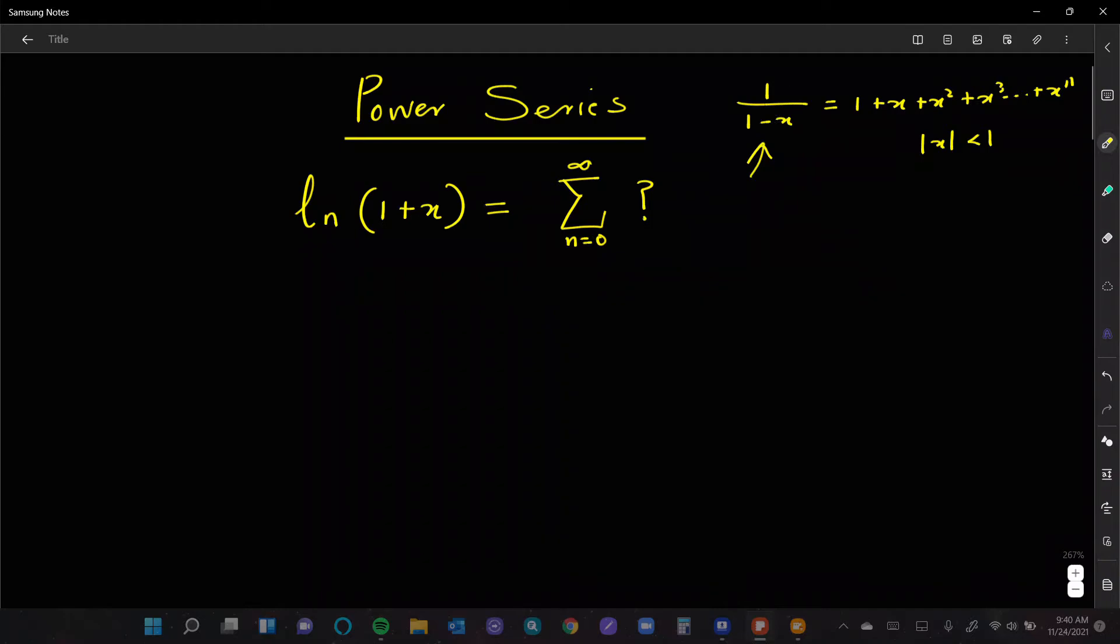So let's say we take the derivative of natural log of 1 plus x. Well, our answer is going to be, the rule is, the derivative of what's inside over what's inside. This is going to be the derivative of what's inside, in this case it's 1, and what is inside is 1 plus x.